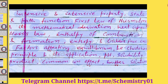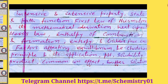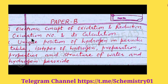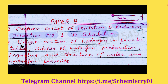Now in Paper B, the first unit is Redox reactions. Here you will study the electronic concept of oxidation and reduction, and you should know how to calculate the oxidation number — the various rules, its calculation, and what is oxidation state versus oxidation number.